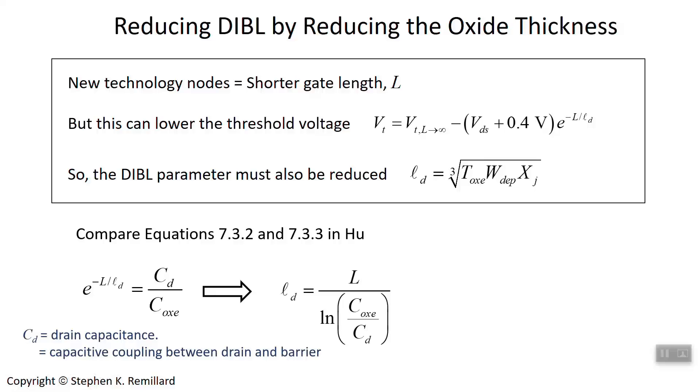Let's rearrange the expression a little bit. The DIBL parameter seems to go inversely with the log of the oxide capacitance over the drain capacitance. It's fairly evident that the oxide capacitance needs to be large for the DIBL parameter to be small.